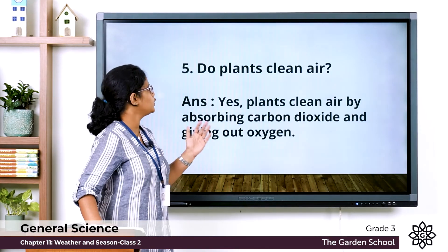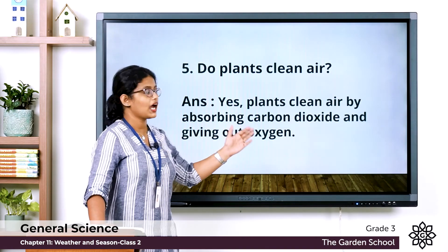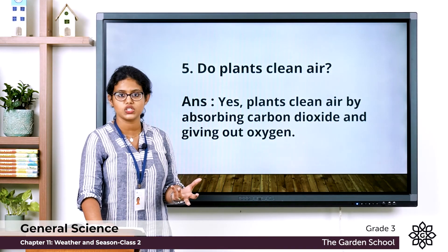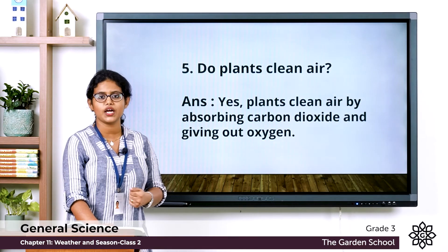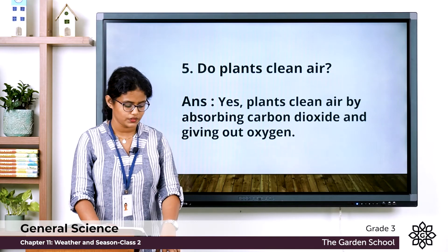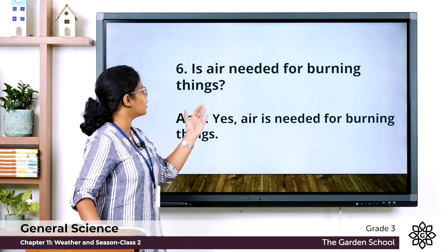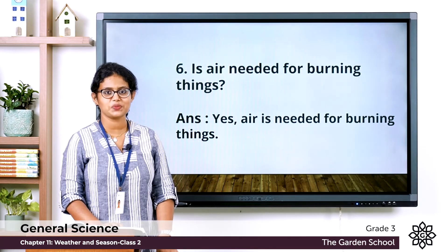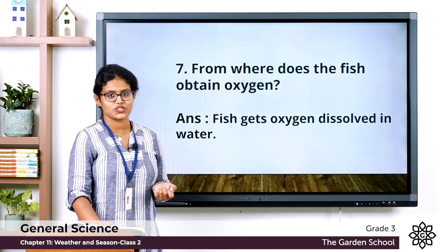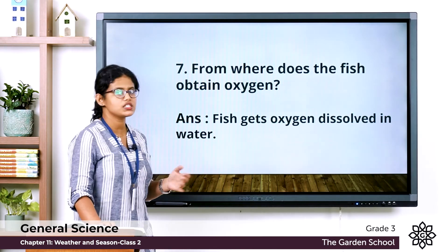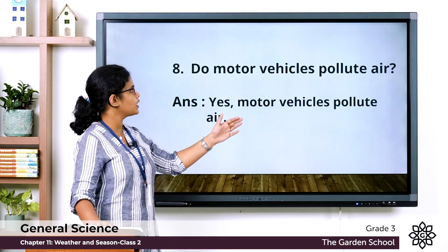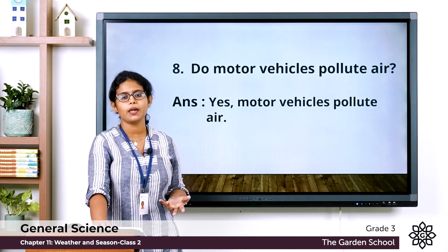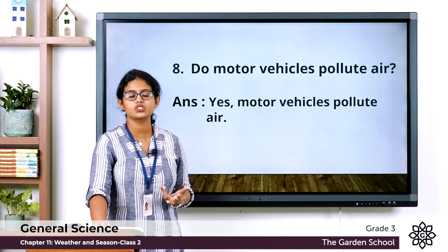Fifth: do plants clean the air? Yes — plants absorb carbon dioxide and give out oxygen. We all need oxygen to live and plants need carbon dioxide to make their food. Sixth: is air needed for burning things? Yes, air is needed for burning things. Seventh: from where does a fish obtain oxygen? Fish gets oxygen dissolved in water. Eighth: do motor vehicles pollute air? Yes — harmful gases emitted from vehicles pollute the air.